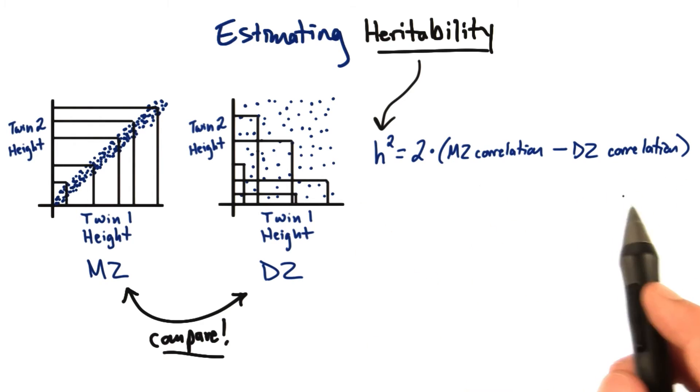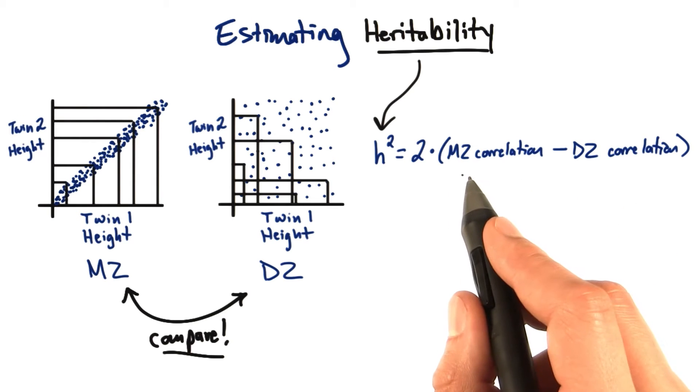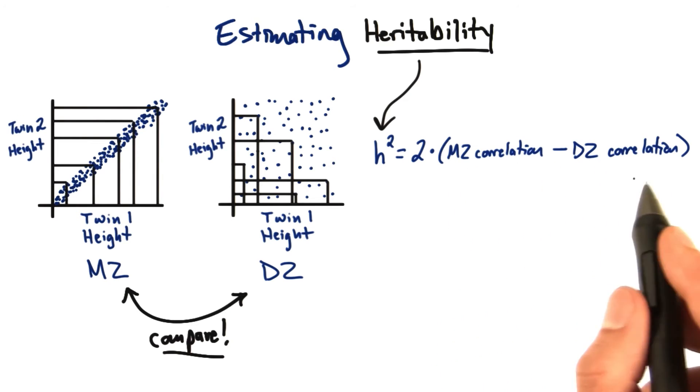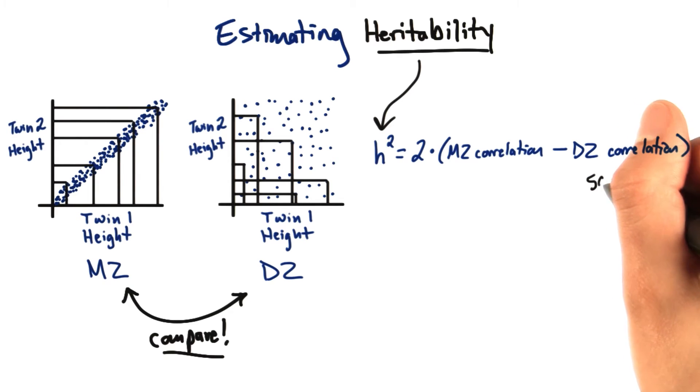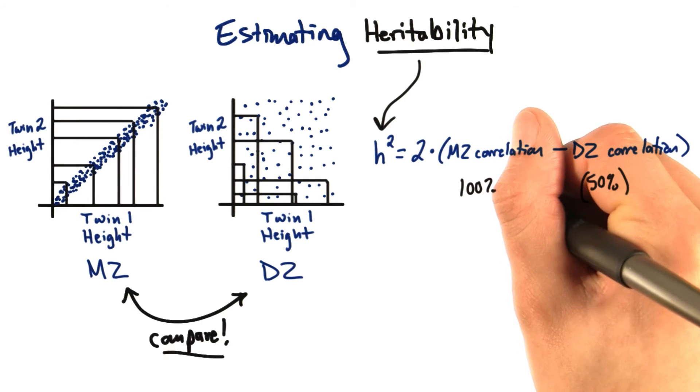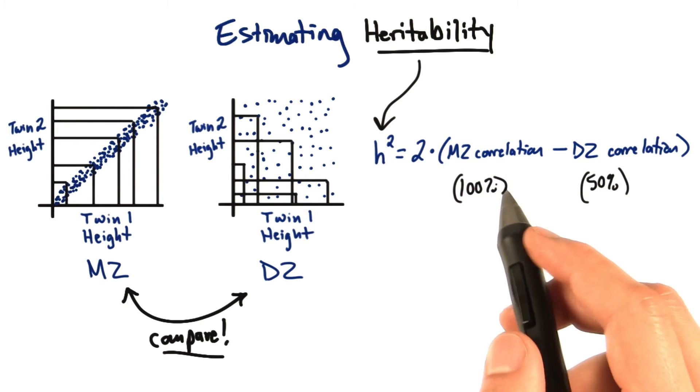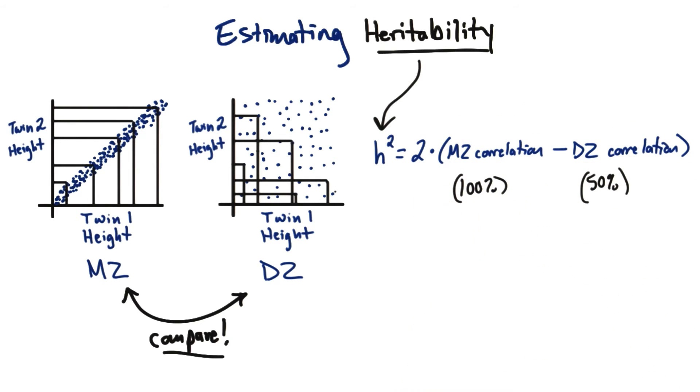Now the chief assumptions here are that monozygotic twins are twice as genetically identical as dizygotic twins. Dizygotic twins are 50% identical and monozygotic twins are 100% genetically identical. And that's where this two comes in outside the parentheses. Because monozygotic twins are twice as identical, or two times as identical, as dizygotic twins.